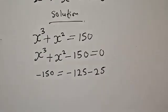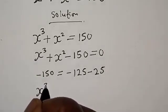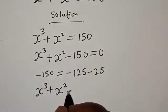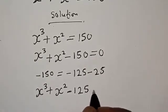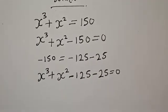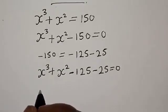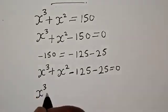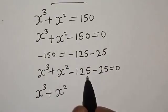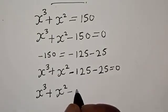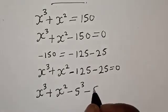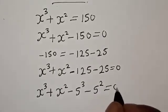We have s raised to power 3 plus s squared minus 125 minus 25 is equal to zero. Note that 125 is 5 raised to power 3, and 25 is 5 squared. So we write: s raised to power 3 plus s squared minus 5 raised to power 3 minus 5 squared is equal to zero.